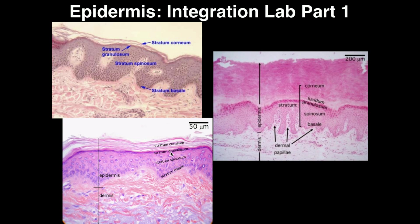The stratum basale is kind of hard to see, but it's essentially the basal surface of the stratum spinosum. If I trace my mouse along the deep surface of the stratum spinosum, this is where the stratum basale is. The stratum basale is the deepest of all the layers of the epidermis. If you go deep to the stratum basale, you're no longer in the epidermis — everything below that is the dermis. So the stratum basale is the deepest layer.